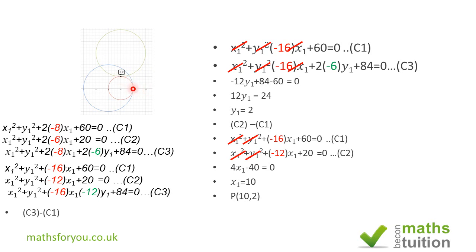To find the tangent length, we substitute x = 10 and y = 2 into any one of the circle equations using our tangent length formula. This gives PT² = 4, so PT = √4 = 2. That is the length of the tangent from point (10, 2) to each of the three circles.